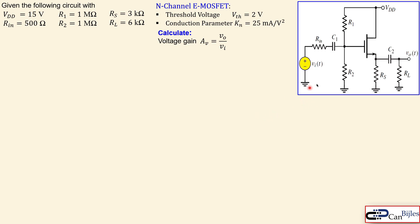We also have AC coupling via capacitors C1 and C2. The input is coupled to this circuit using C1 and the load RL is coupled using C2. The capacitor values are chosen for sufficient bandwidth and maximum available gain at the specific frequency. We don't worry about the actual values of C1 and C2. What we want is the voltage gain Vo over Vi from input all the way to output.